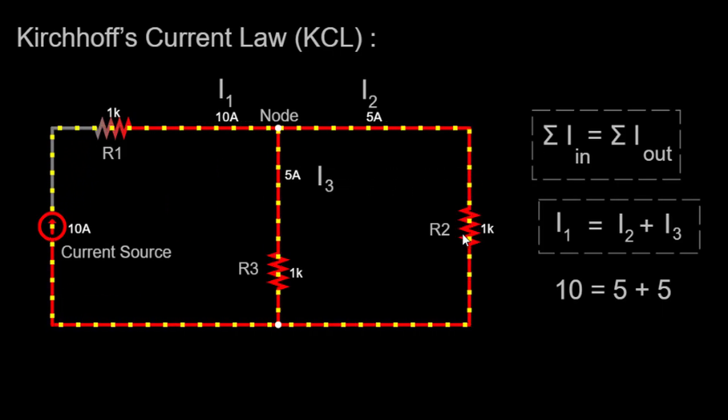We will denote the currents through R1, R2, and R3 as I1, I2, and I3, respectively.